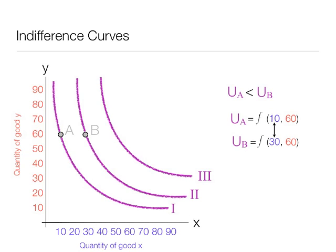Let me add one more point in here, it would be point C. And at point C, utility is a function of 50x and 60y. So we know that utility C is greater than utility B is greater than utility A. Again, same amount of y, but a lot more x from 30 to 50.